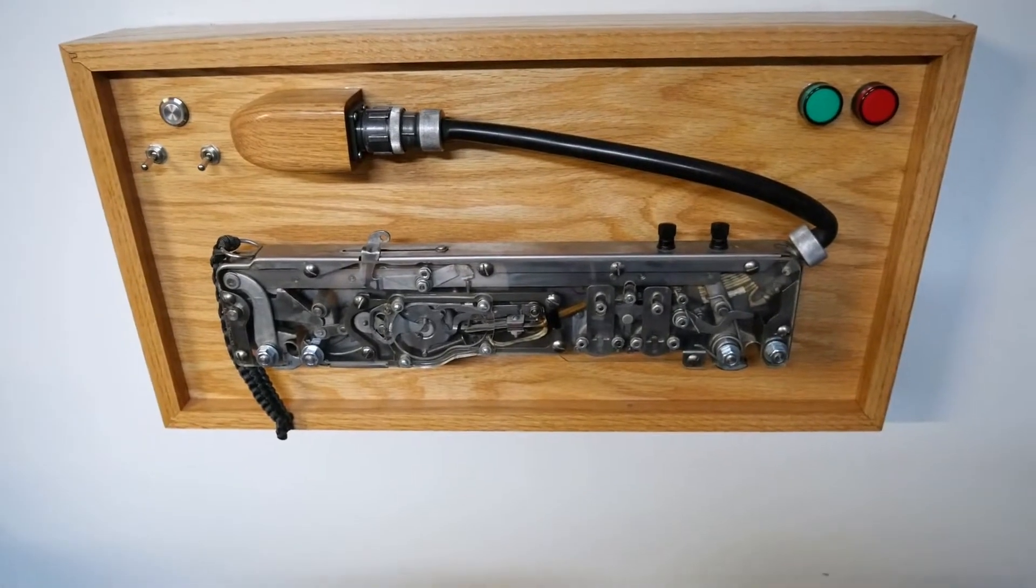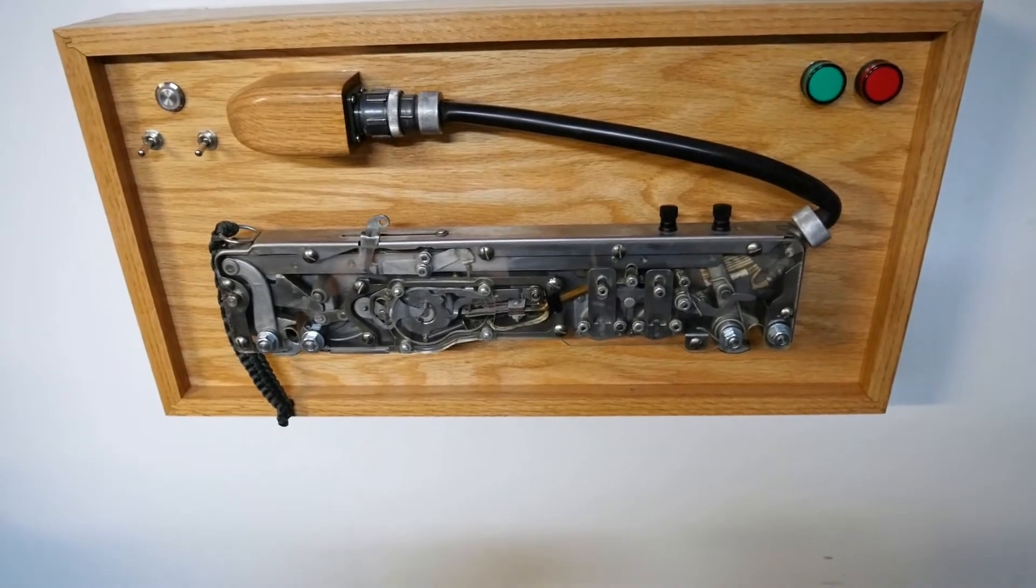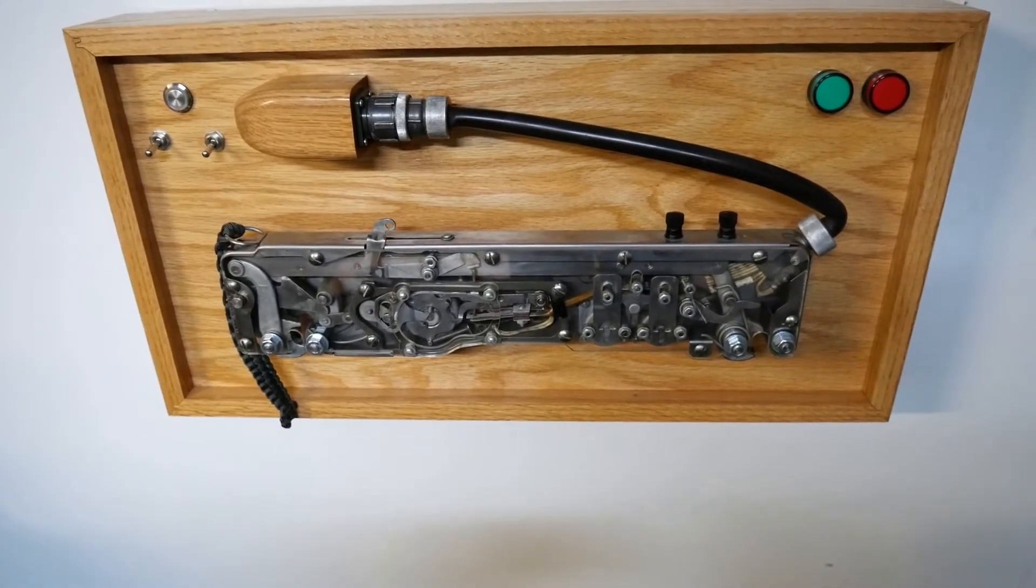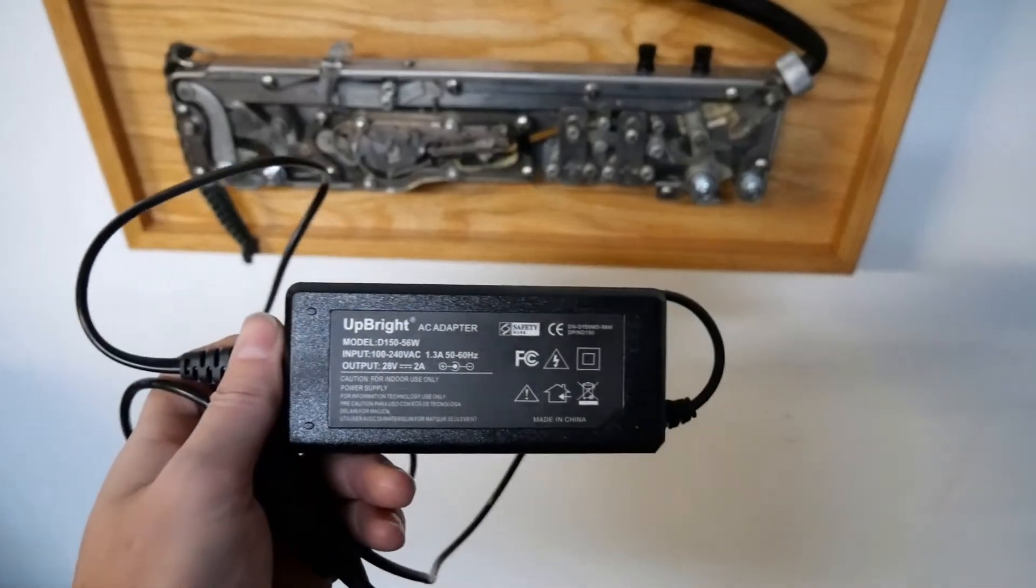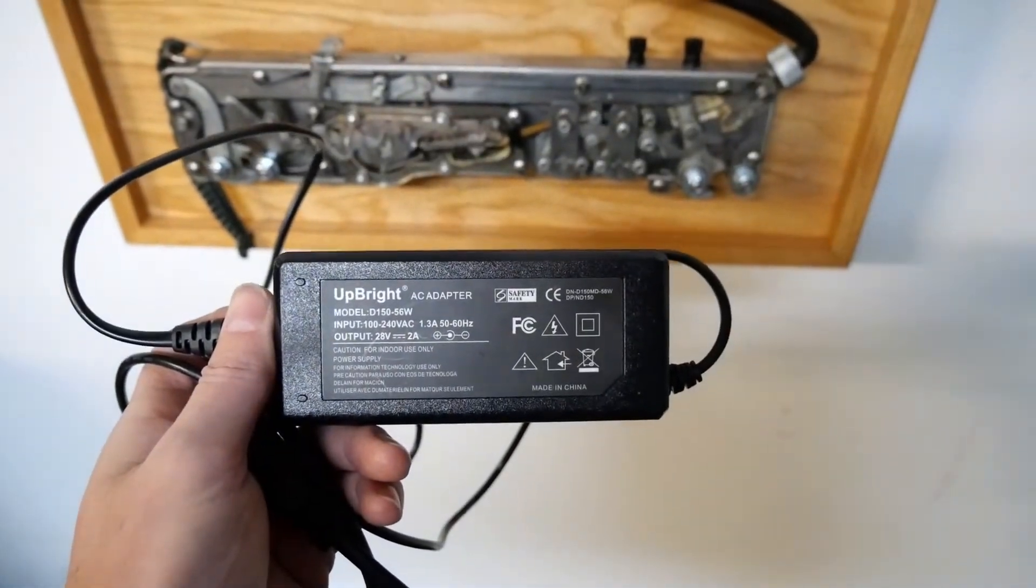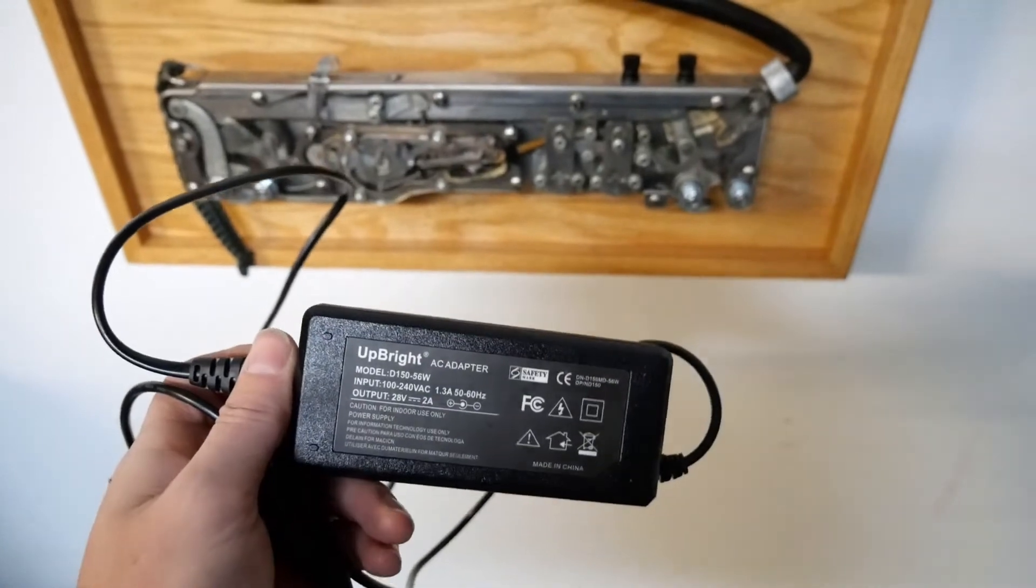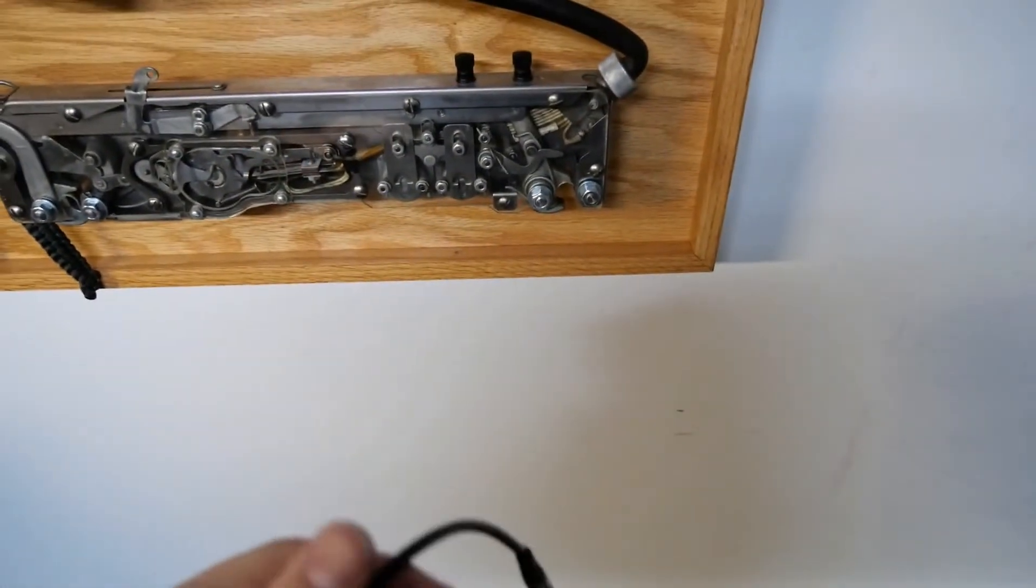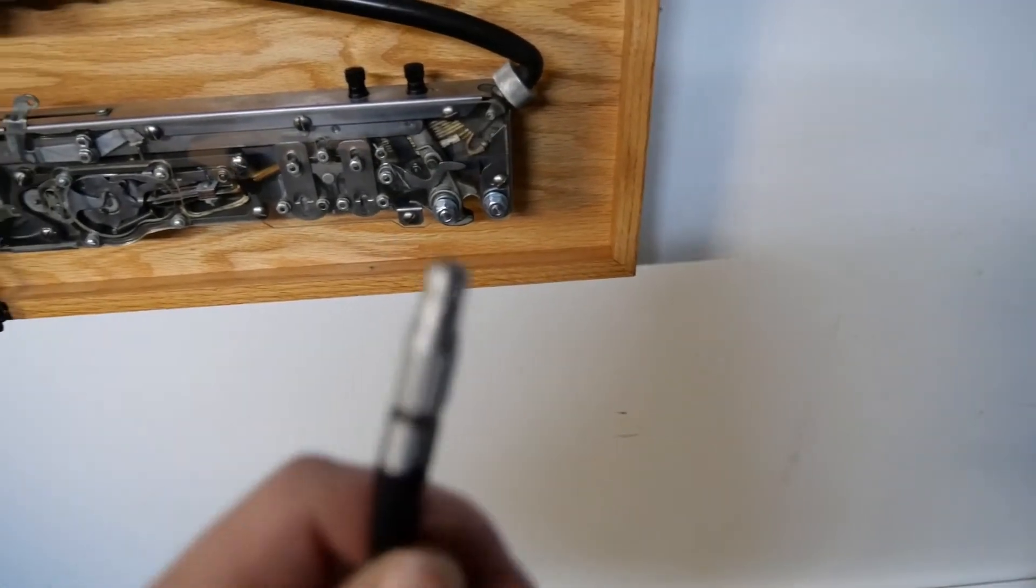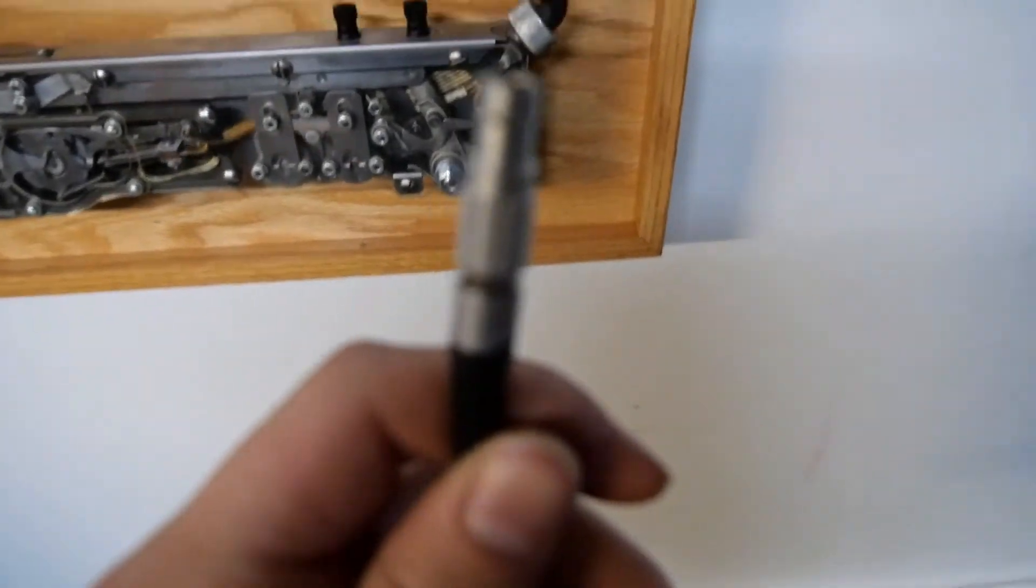One of the main components required to run this bomb rack is the proper power supply. So I ended up finding a power supply on eBay. It is a 28 volt power supply just like aircraft electronics would be, and then on the end of this power supply I've placed just a standard lemo connector.